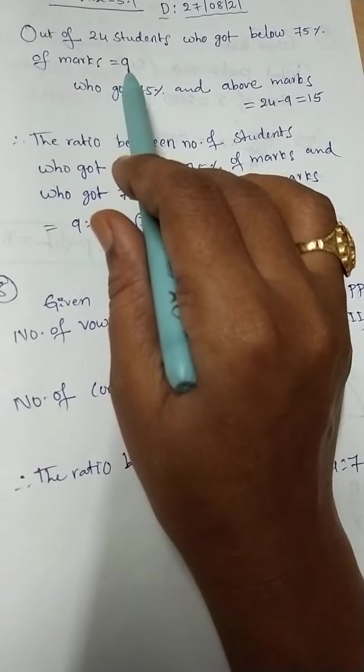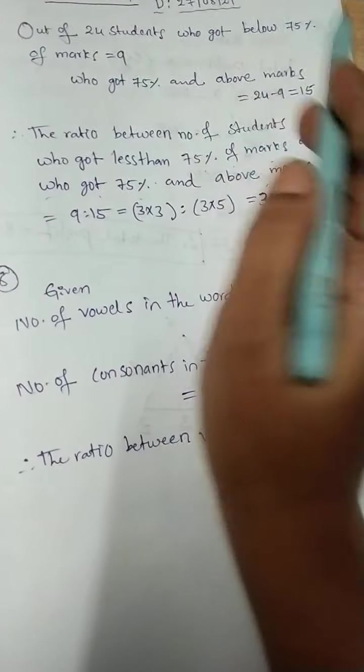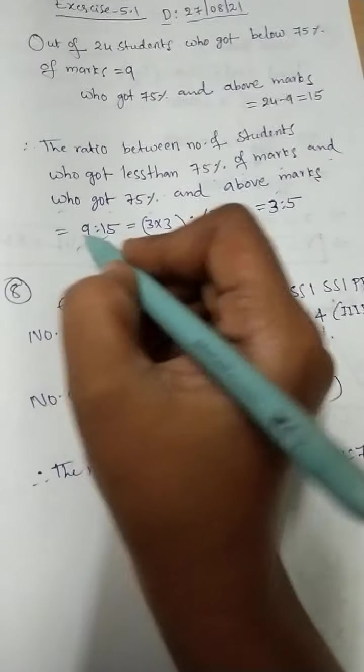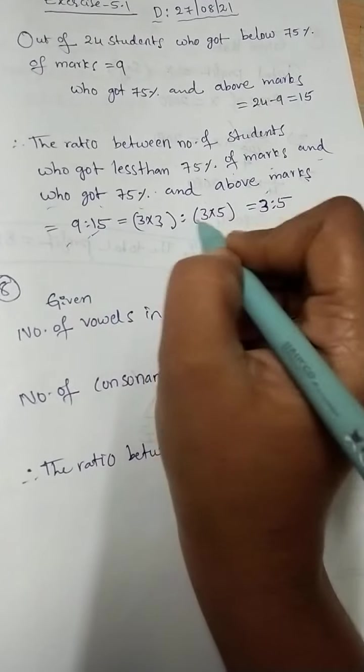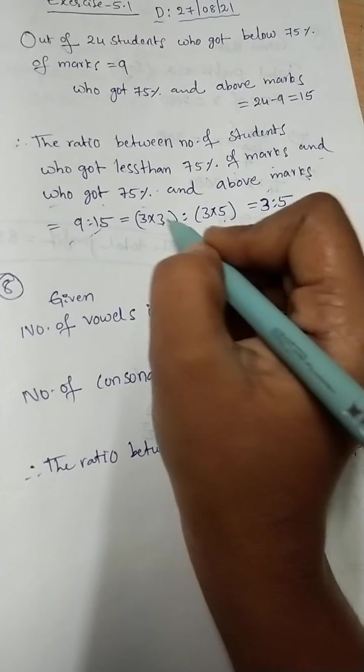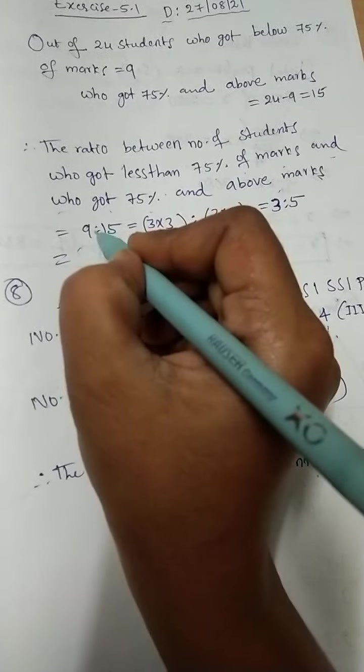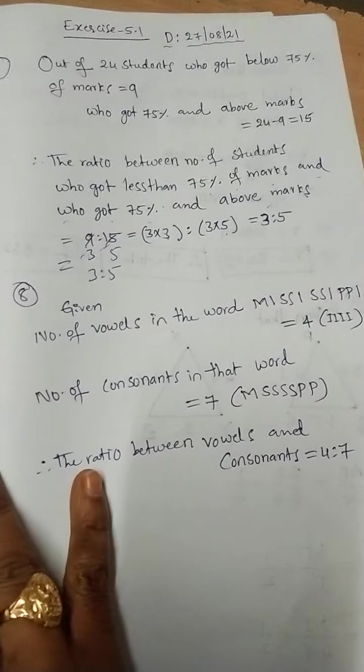The ratio between number of students who got less than 75% of marks and who got 75% and above marks: who got below 75 is 9, now 9 is to 15. Now 9 we can write as 3 into 3 is to 3 into 5, so 3 will cancel, 3 is to 5. Otherwise, directly you can do the cancellation with 3 table: 3 threes are 9, 3 fives are 15, so 3 is to 5. That is the 7th question solution, very simple.